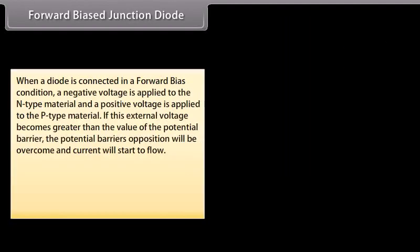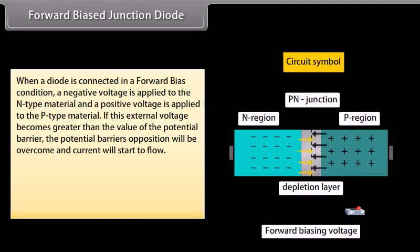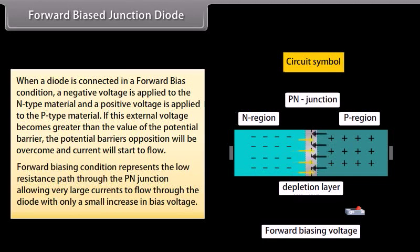When a diode is connected in a forward bias condition, a negative voltage is applied to the N-type material and a positive voltage is applied to the P-type material. If this external voltage becomes greater than the value of the potential barrier, the potential barrier's opposition will be overcome and current will start to flow. Forward biasing represents the low resistance path through the P-N junction, allowing very large currents to flow through the diode with only a small increase in bias voltage. The actual potential difference across the junction is kept constant by the action of the depletion layer.